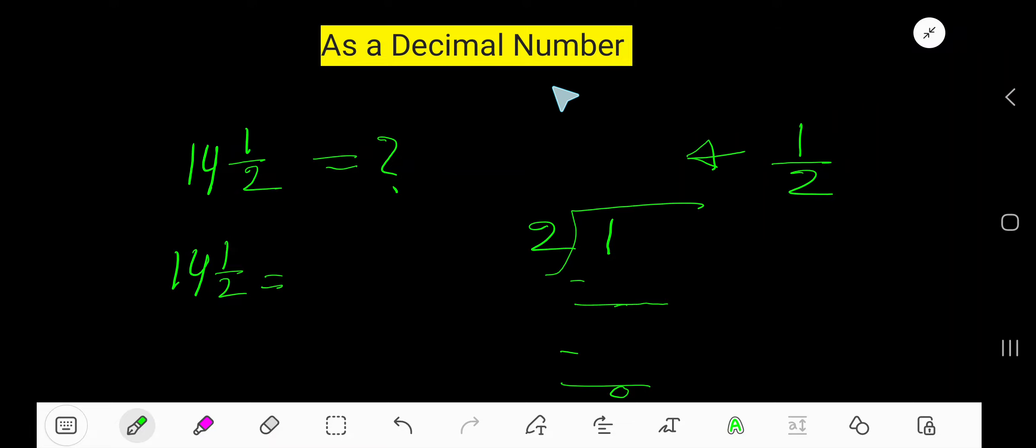14 and a half as a decimal number. The whole number part you don't need to change, just change the fractional part.